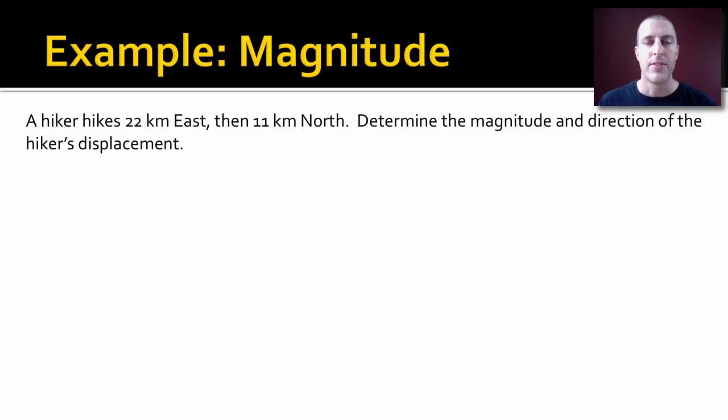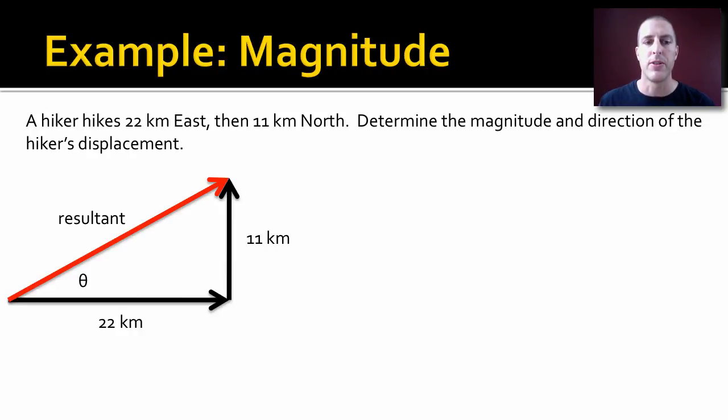Let's do an example. Let's find the magnitude of this vector mathematically. We have a hiker who hikes 22 kilometers east. Let's draw that vector. Then 11 kilometers north. Let me draw that vector. We want to find the magnitude and direction of the hiker's displacement, which will be straight from start to finish. The red vector is going to be our resultant, and theta is going to be the angle we're trying to find.